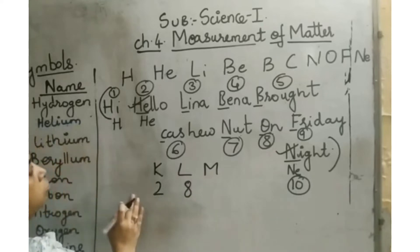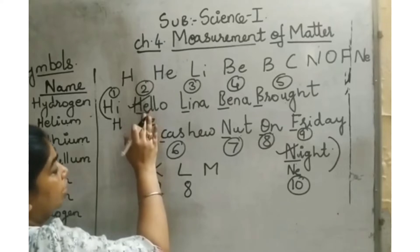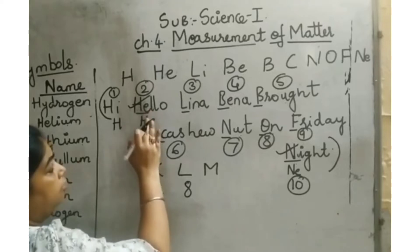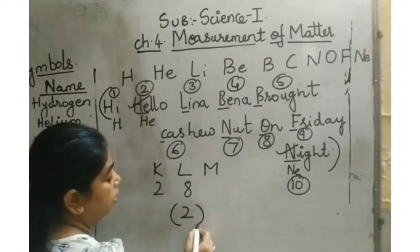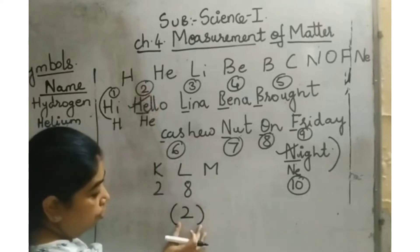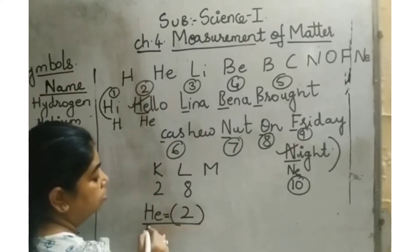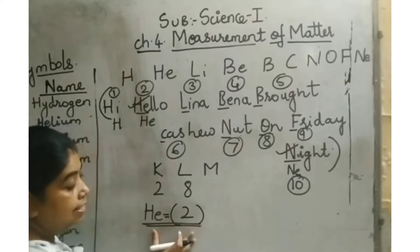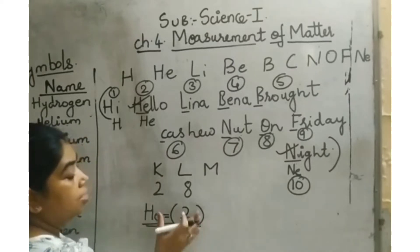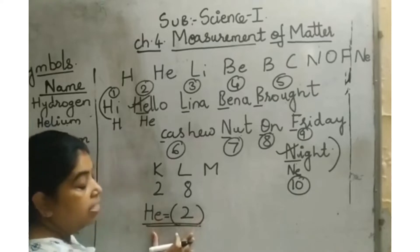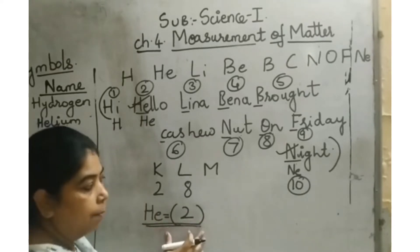If we take the electronic configuration of helium, helium has 2 electrons in its outermost orbit, so it is considered a stable element. These types of elements are called stable elements, inert gases, or zero group elements.